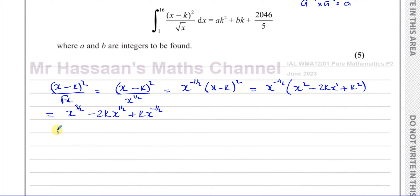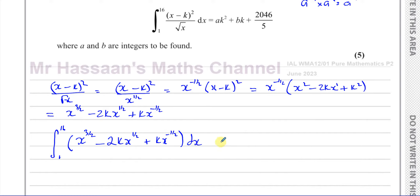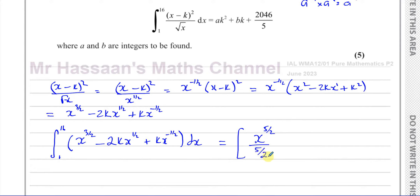Now I'll do the actual integration between the limits of 1 and 16. We integrate the expression x to the three over two, minus 2k times x to the one over two, plus k squared times x to the negative one over two, with respect to x. Adding one to the power and dividing by the new power: three over two plus one is five over two, so the first term becomes x to the five over two divided by five over two.